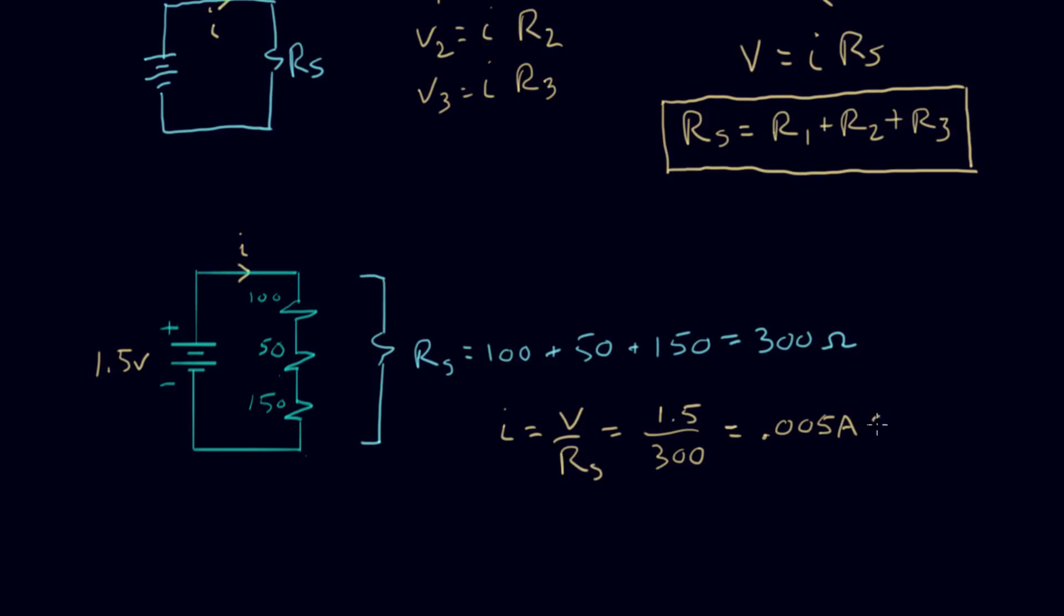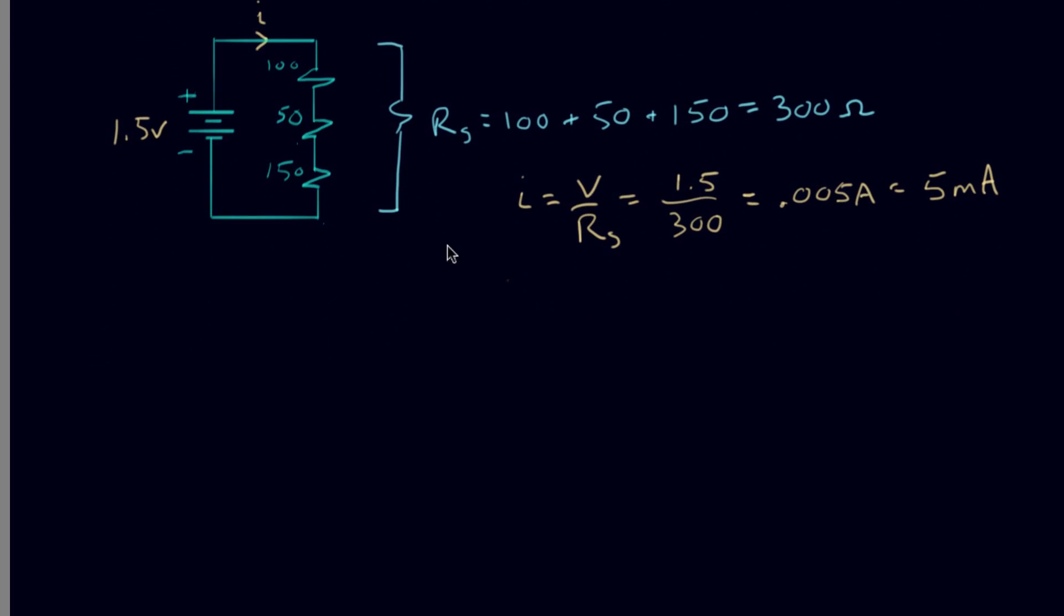that comes out to 0.005 amperes, or an easier way to say it is 5 milliamps. So that's I. And now that I know I, I can go ahead and I can calculate the voltage at each point across each resistor. Because I know I, I know R, I can calculate V.